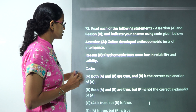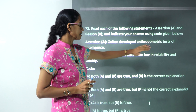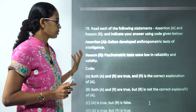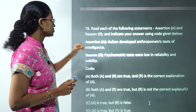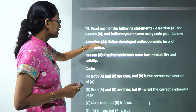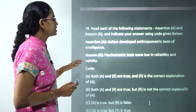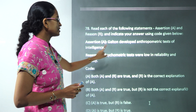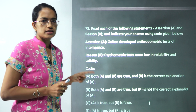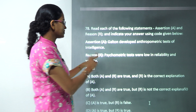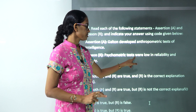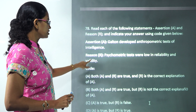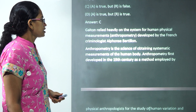The next assertion-reason question covers Galton's anthropometric test of intelligence, which measured human physical measurements — that's correct, so the assertion is correct. However, this Galton method had low validity and was not a psychometric test. The reason, stating that psychometric tests were low on reliability and validity, is incorrect. So assertion is correct and reason is incorrect.